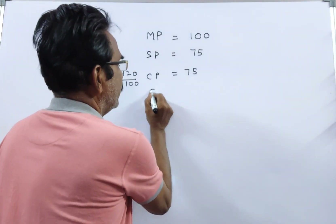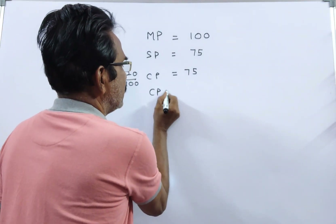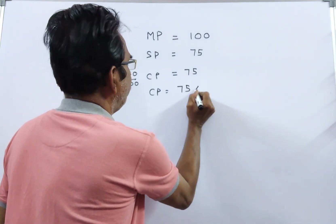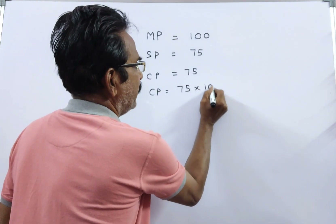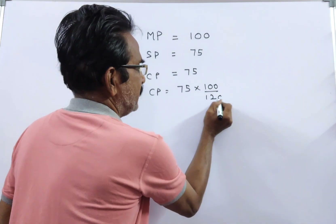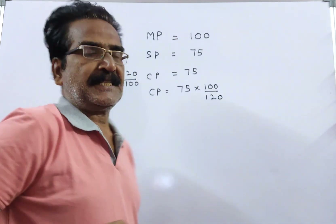So the cost price is equal to 75 × 100/120. This is the cost price.